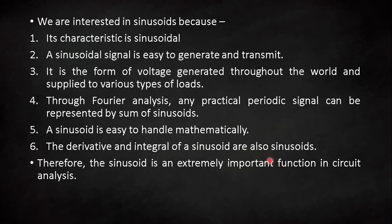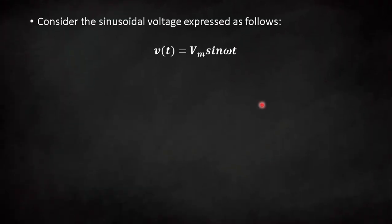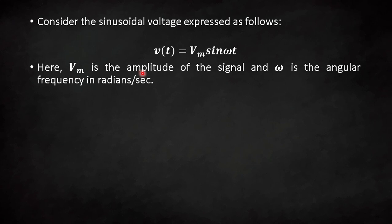When a time-varying sinusoidal excitation is given to any system, the behavior of the system can be found out very easily. Let us discuss one of the simplest examples of a sinusoidal function. Let's say the voltage excitation is defined as V(t) = Vm sin(ωt). Here Vm is the maximum value, or peak value, or amplitude of the signal. The term ωt is the angle, and its unit is degrees.